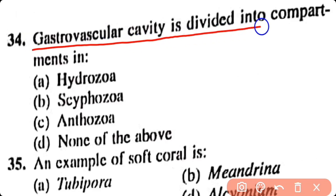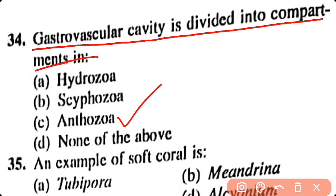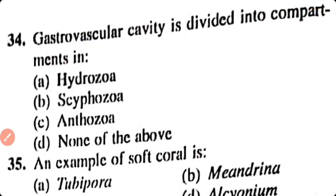The gastrovascular cavity is divided into compartments in: Hydrozoa, Scyphozoa, Anthozoa. Option C. In class Anthozoa, the gastrovascular cavity is divided into compartments which are known as mesenteries.